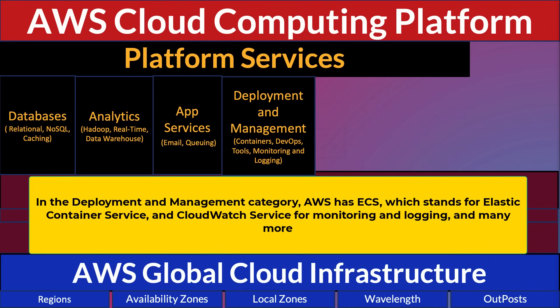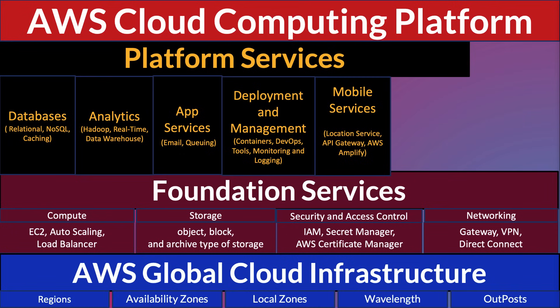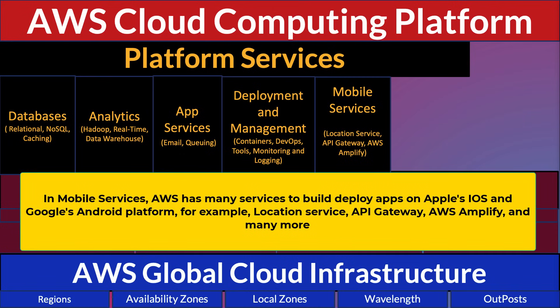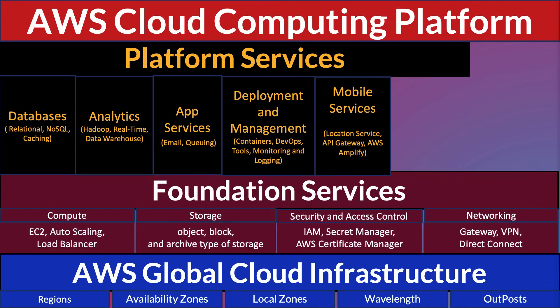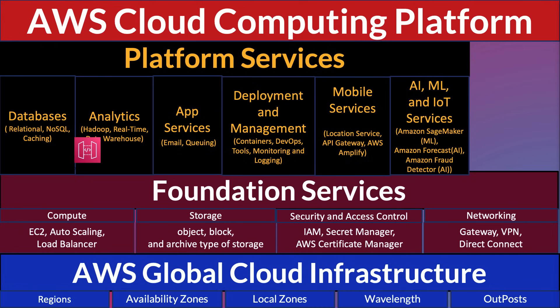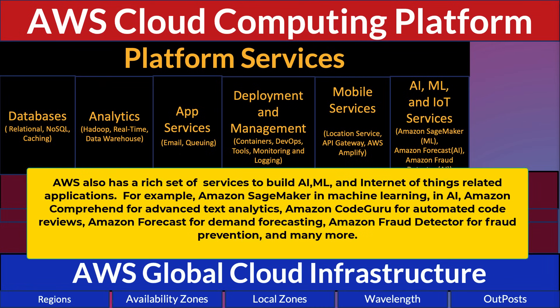In mobile services, AWS has many services to build and deploy apps on Apple's iOS and Google's Android platforms, such as location service, API Gateway, and AWS Amplify. AWS also has a rich set of services to build AI, ML, and Internet of Things-related applications.